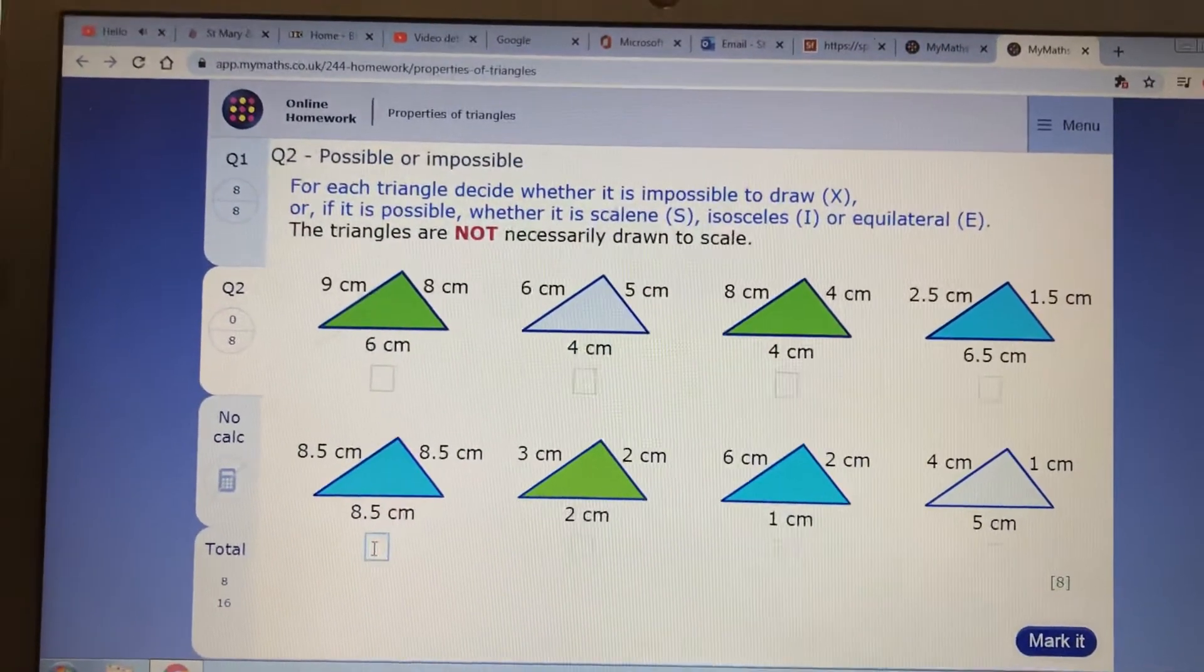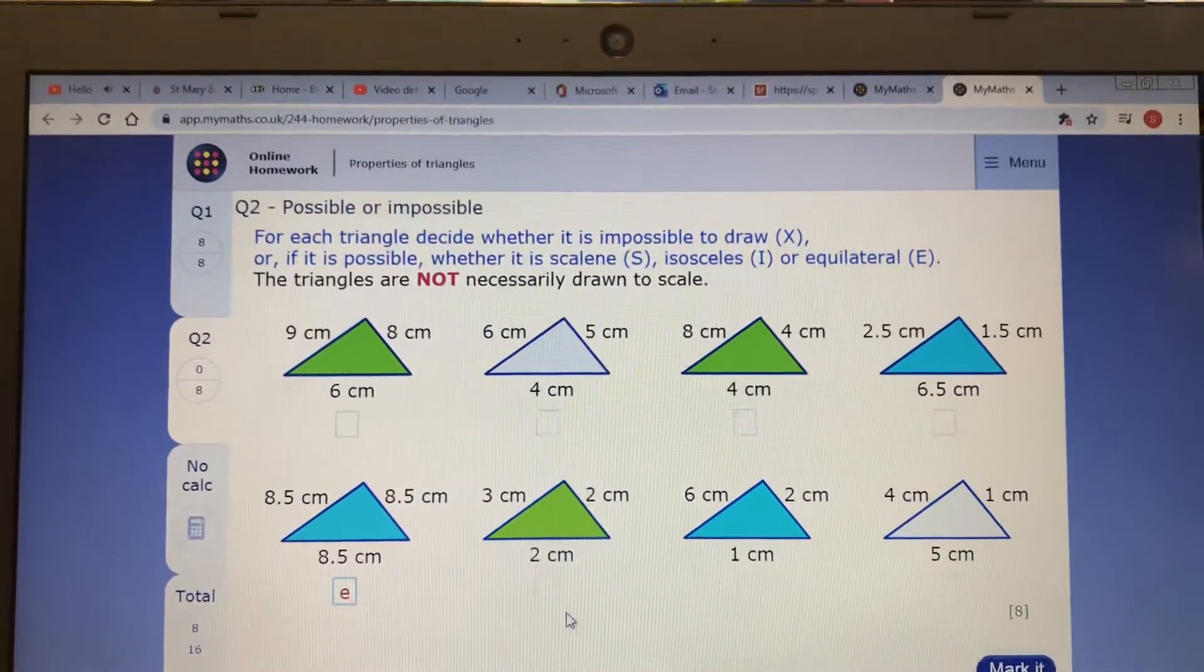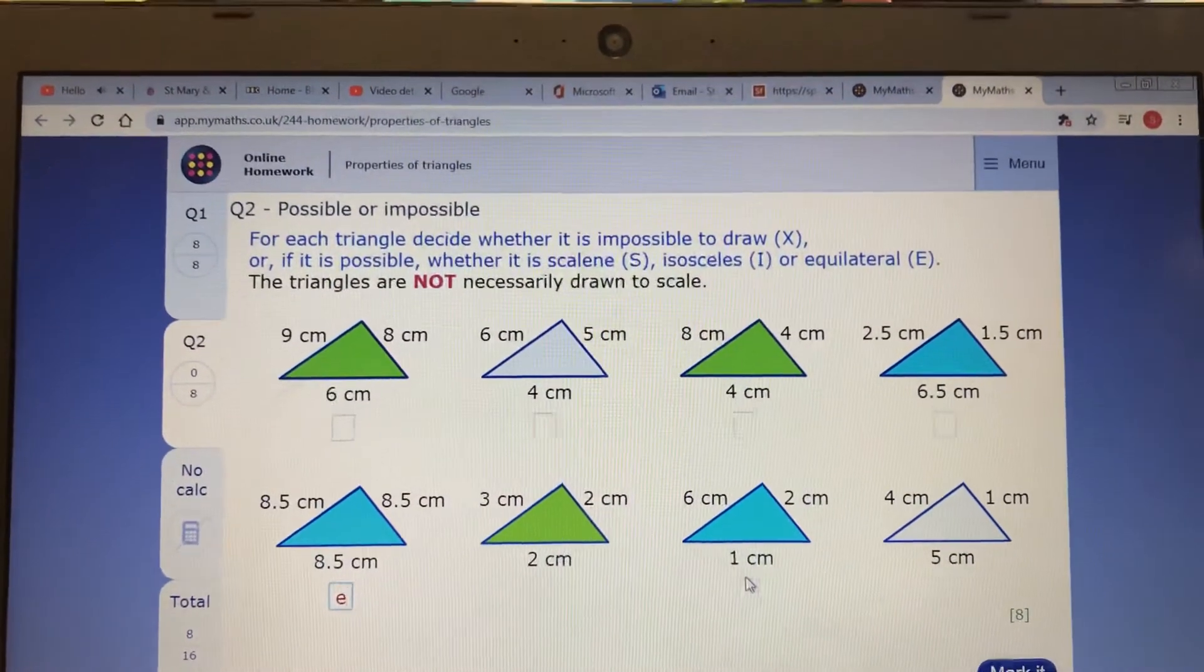We can see that we've got an equilateral there, so you can put an E in there. Any more equilaterals, Mr. F? No, this one's going to be a really tricky one. Okay, let's try it then.